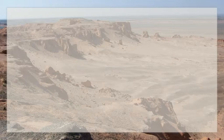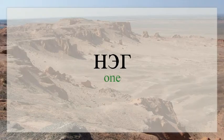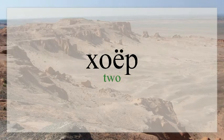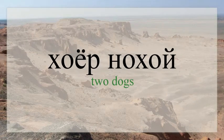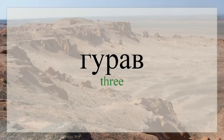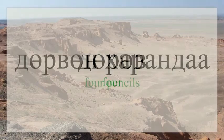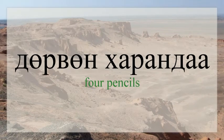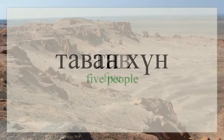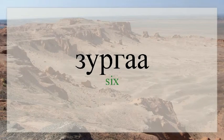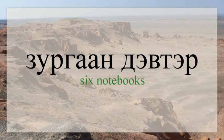Let's start with numbers followed by nouns. Nэг, хоёр, хоёр ноохой, гурав, гурван гэр, дөрөв, дөрвөн харандаа, тав, таван хүн, зургаа, зургаан дэлгүүр.